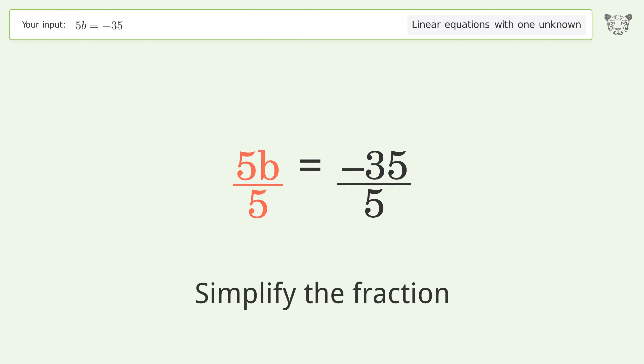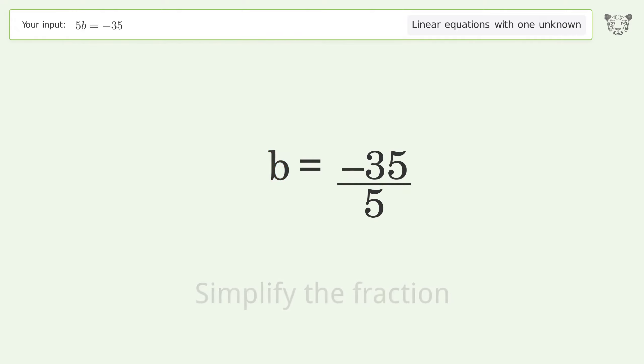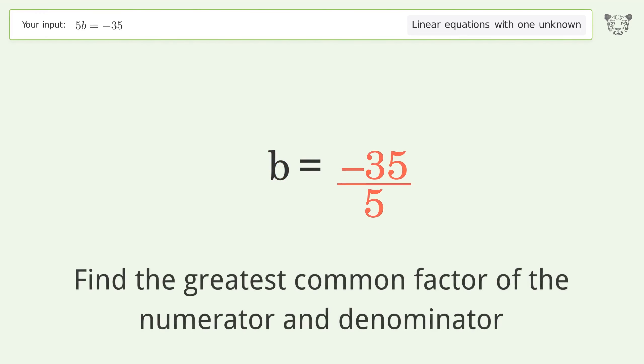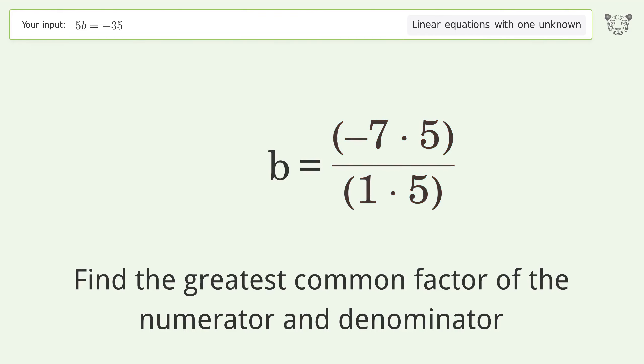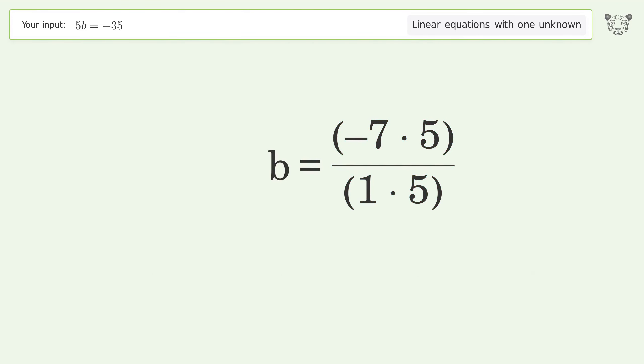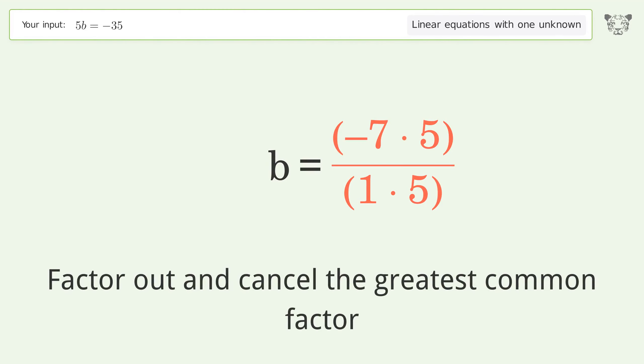Simplify the fraction. Find the greatest common factor of the numerator and denominator. Factor out and cancel the greatest common factor.